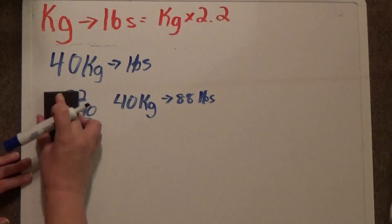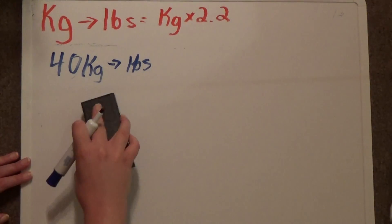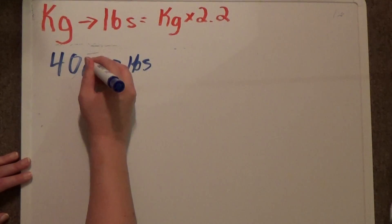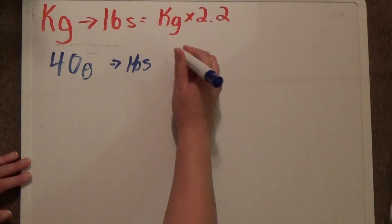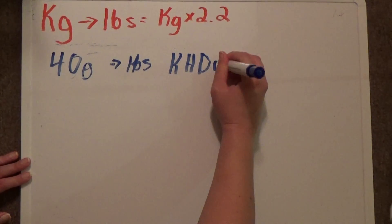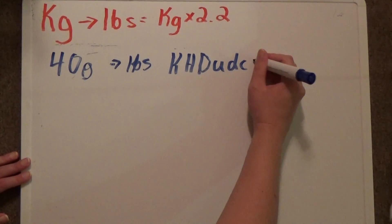Let's do another problem, except this time we're going to make it a little bit harder. Instead of kilograms, 40 grams to pounds. The first thing that I do is I'm going to write out my K, H, D, U, D, C, M.